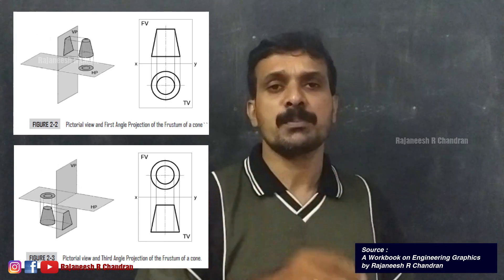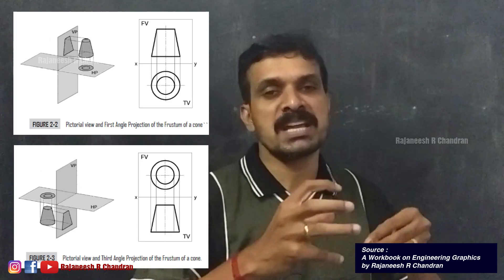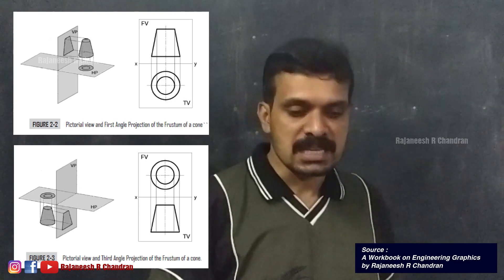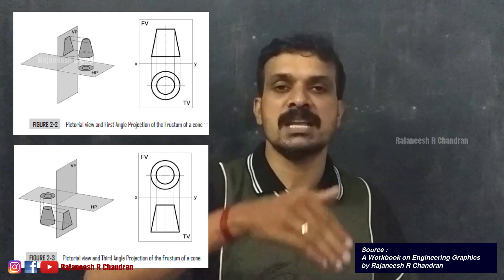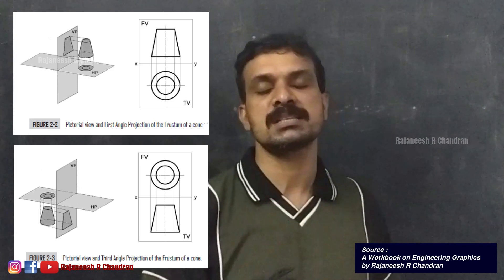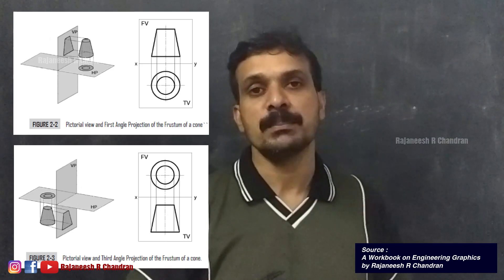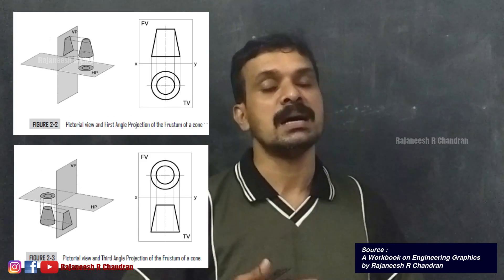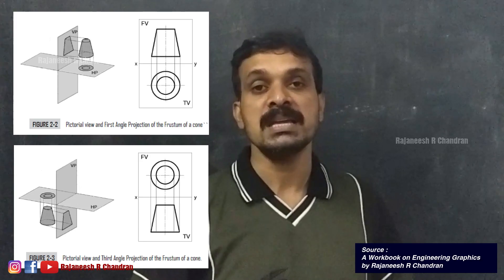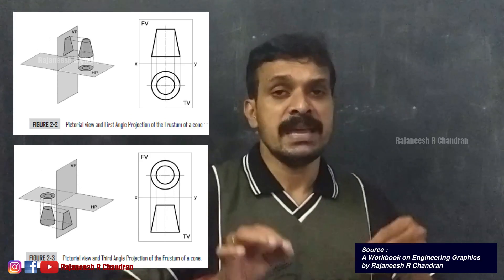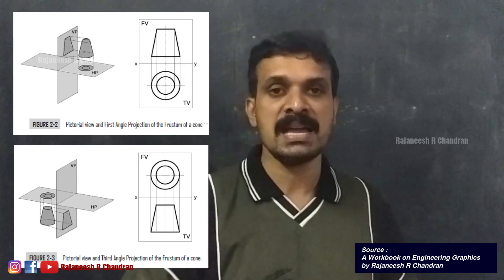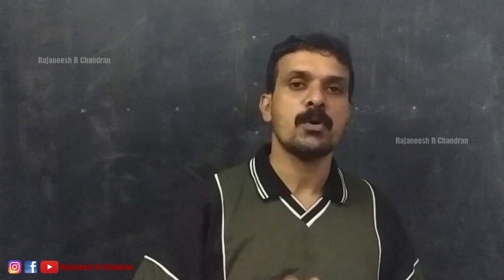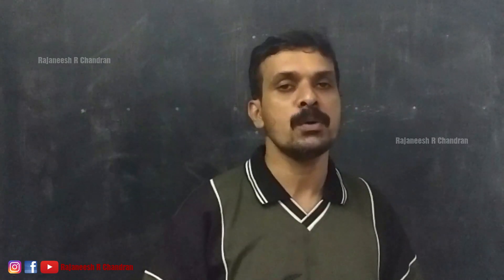In a first angle projection, the object is placed in the first quadrant, so the front view will always lie above the XY line and the top view will always lie below the XY line. In a third angle projection system, the front view will always lie below the XY line and the top view above it. The XY line or reference line is the line which differentiates the vertical plane and the horizontal plane.